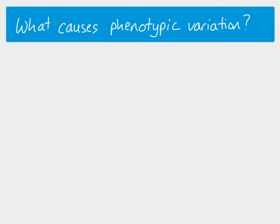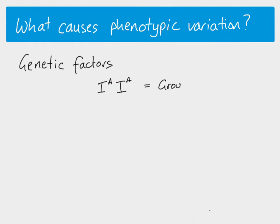This video is more interested in phenotypic variation. Genetic factors are one of the main reasons we have phenotypic differences. For example, blood group: someone with genotype IAIA has blood group A — the genotype directly and solely determines their blood group. Someone with a different genotype, such as IBIO, has a different phenotype as a direct result of their different genotype.